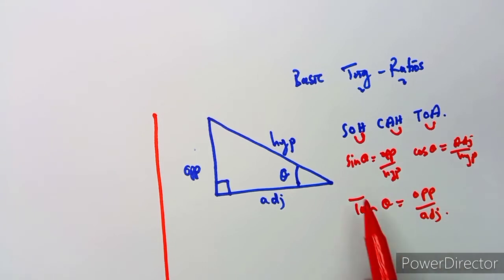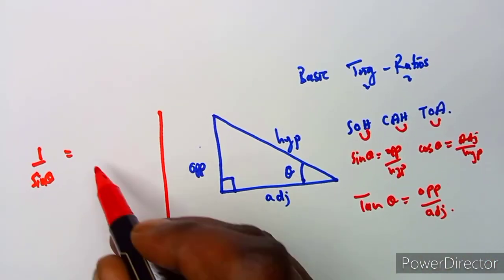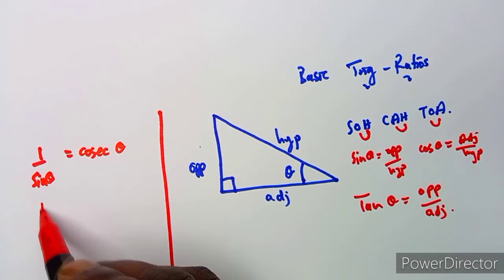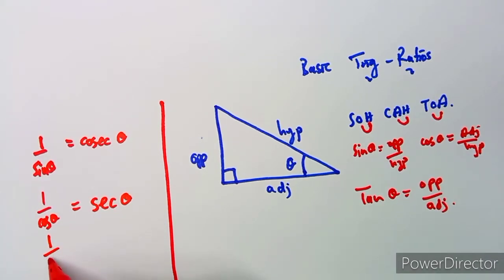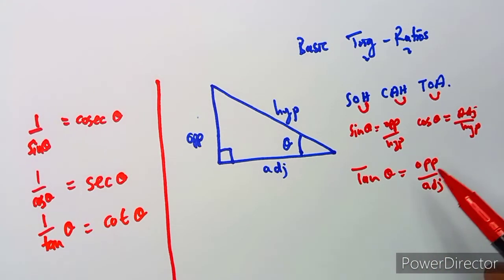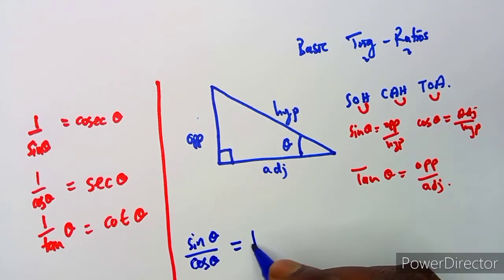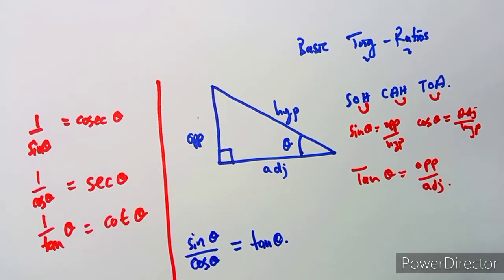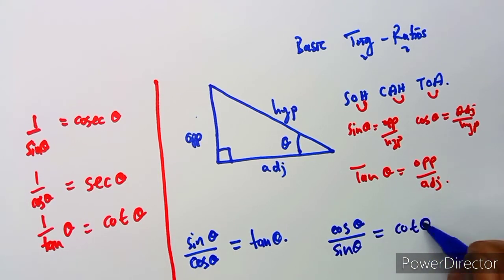One over sine theta gives us cosec theta. One over cos theta is equivalent to sec theta. One over tan theta is equivalent to cot theta. You need to know these identities. Also, the relationship: sine theta over cos theta is equivalent to tan theta. So one over tan theta, which is cot theta, means cos theta over sine theta equals cot theta.